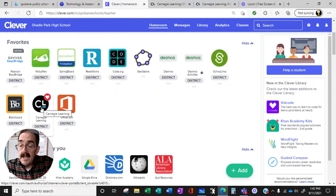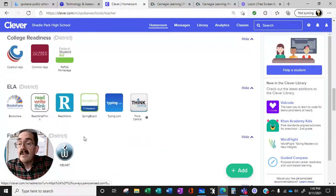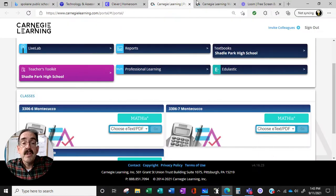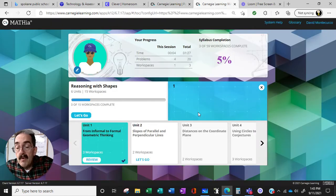You've got to go find the CL button. If you haven't done it or you didn't bookmark it, it's under math. Once you click there, you're going to go and you need to click on the MathIA icon.